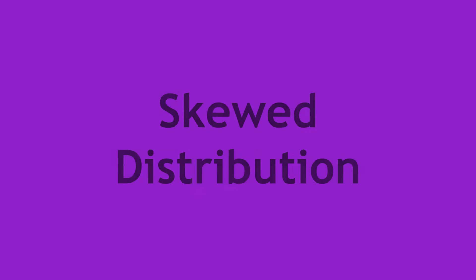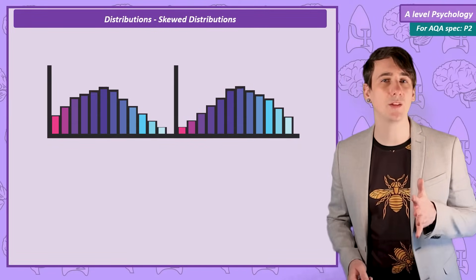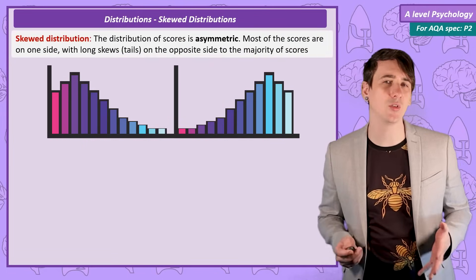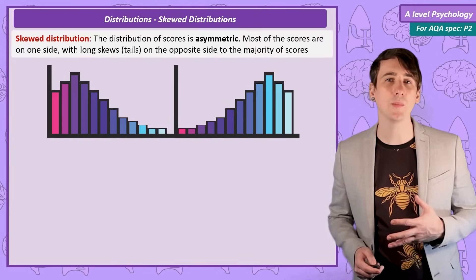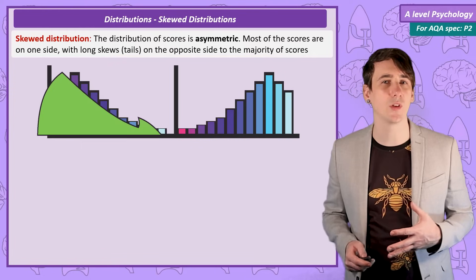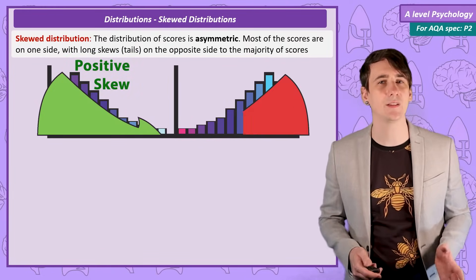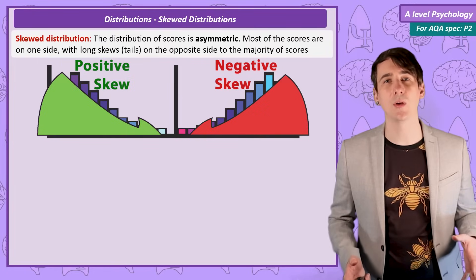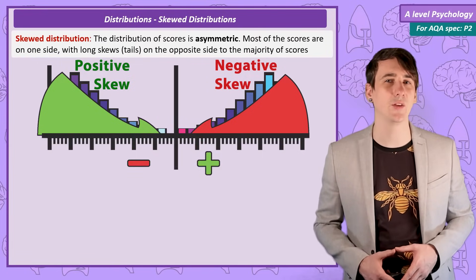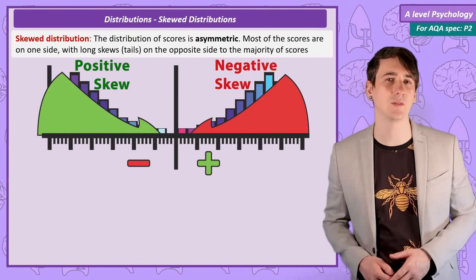We can also get distributions in which the scores are shifted to one side, with a long tail either to the right or to the left — this stops the graph from being symmetrical. If the long tail on the graph is pointing to the right, then it's a positive skew. If the tail is pointing to the left, then it's a negative skew. That makes it easy to remember: you just need to think about what side of the number line the tail is pointing to. Positive for positive, negative for negative.